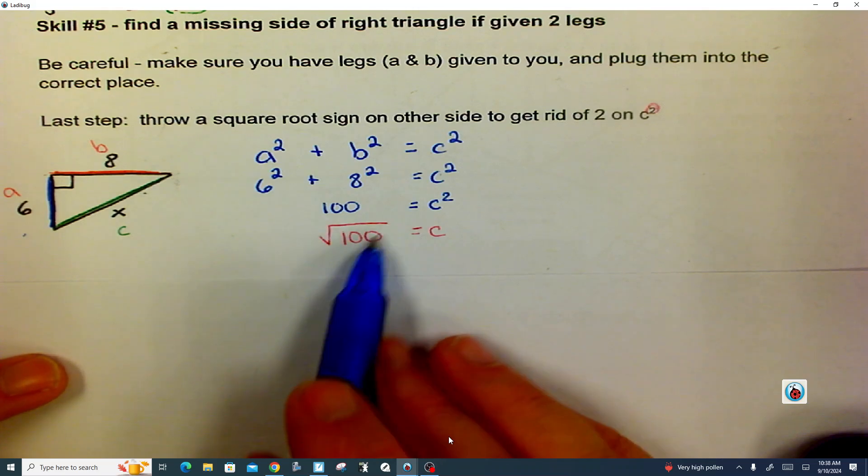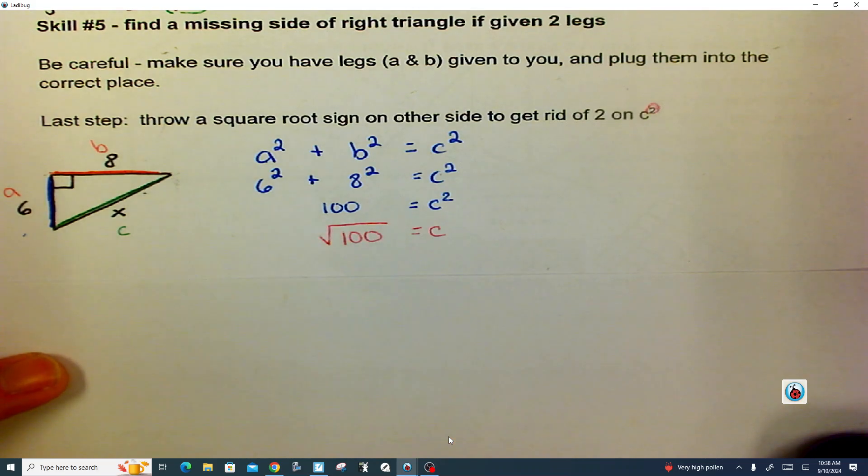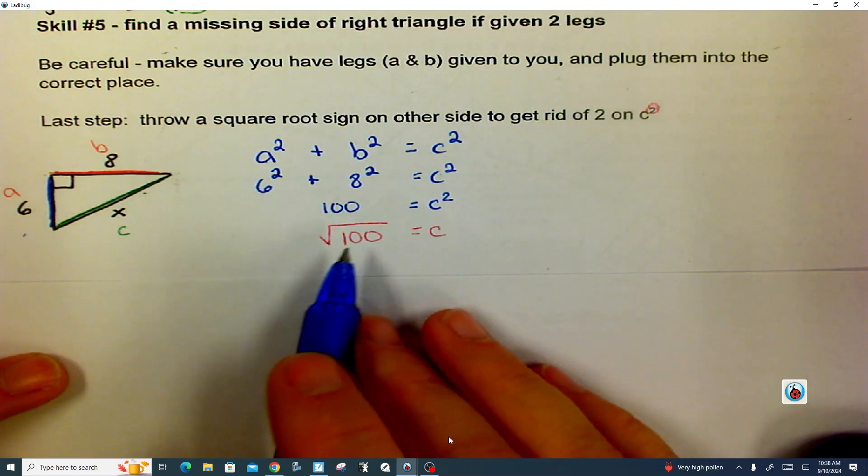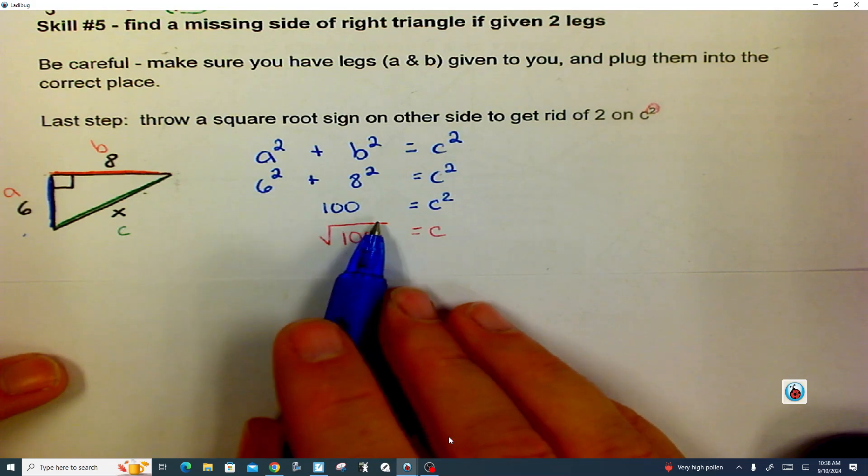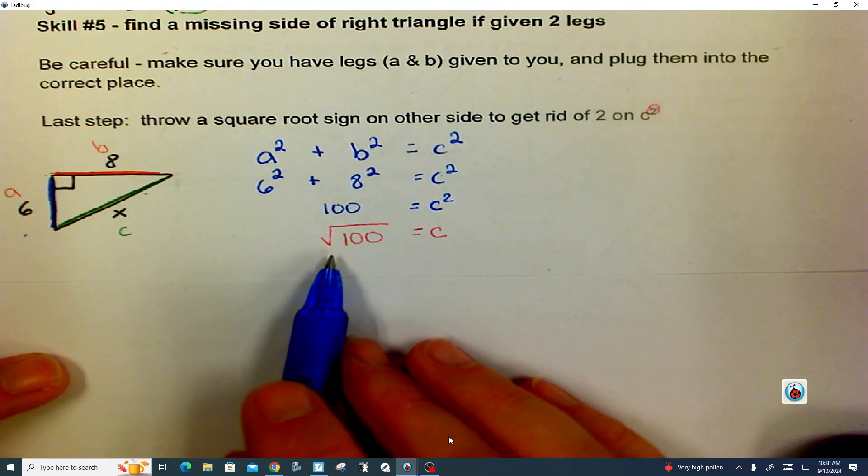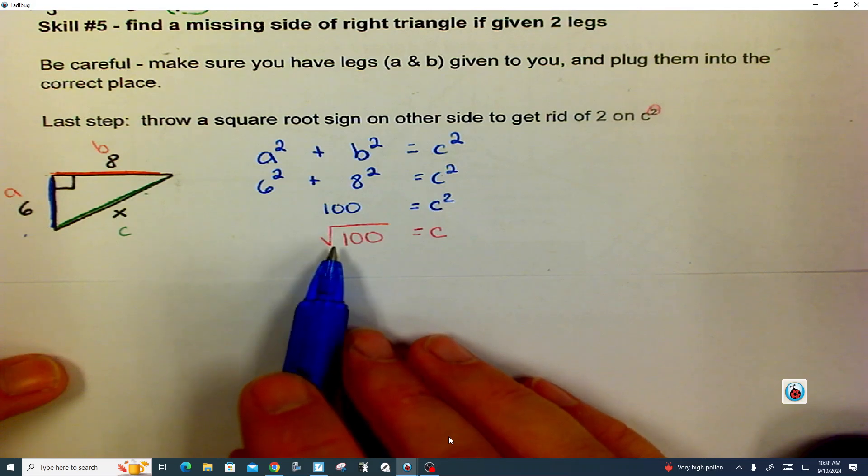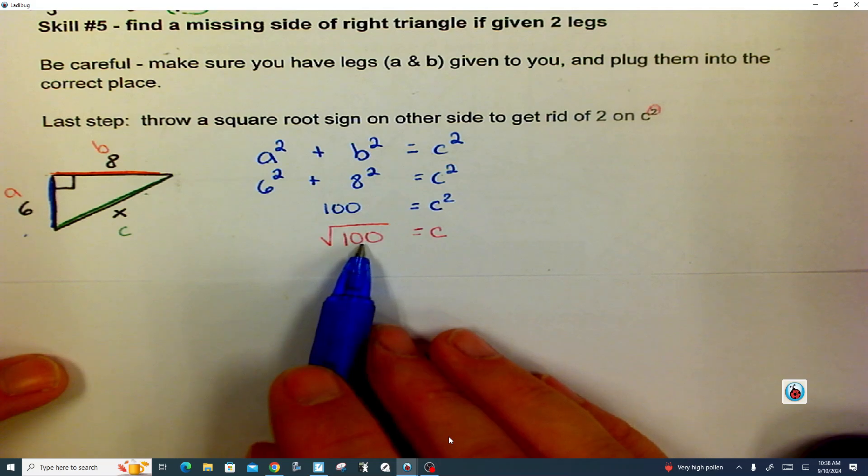But when you put a square root sign over here, and some of you guys, at this point in the eighth grade year, we've not hit square roots yet, what's happening is that this is asking a very special question, kind of like absolute value. It says, hey, can you tell me what number times itself would equal what's underneath me? So what number times itself equals 100?